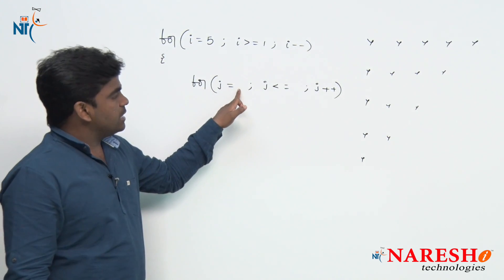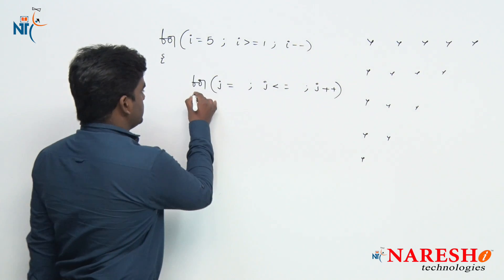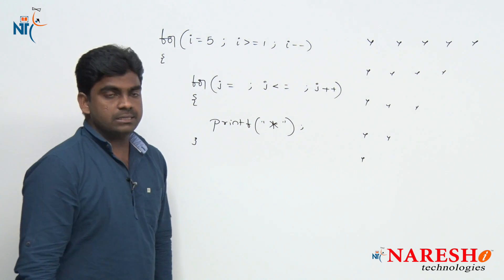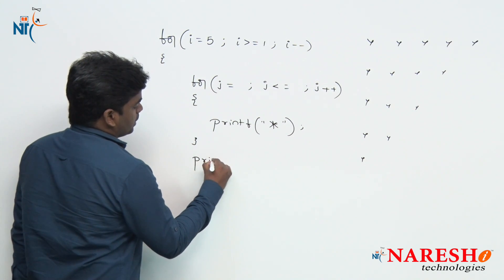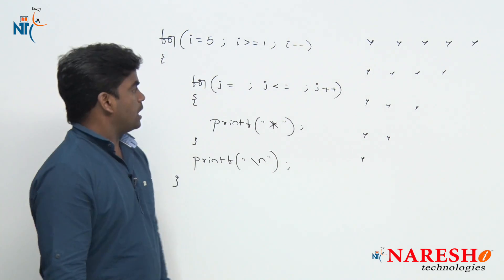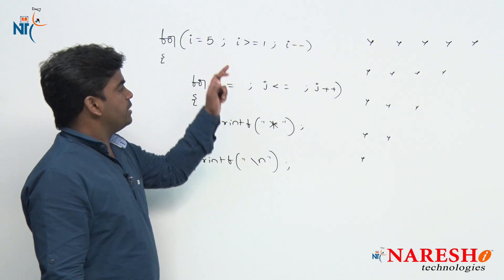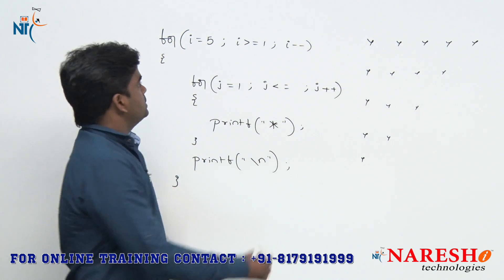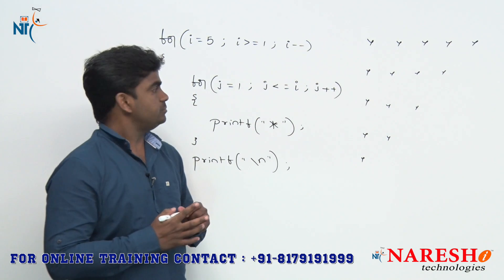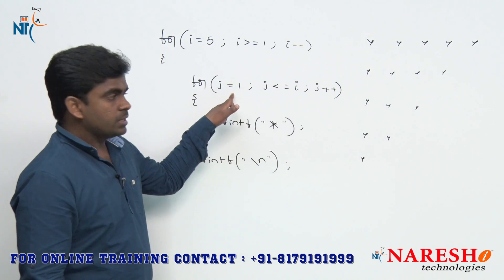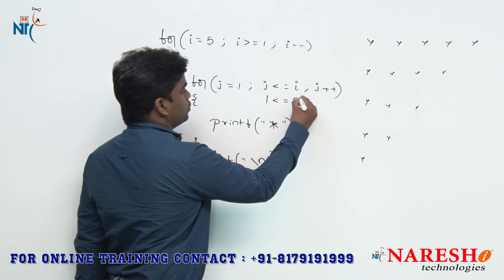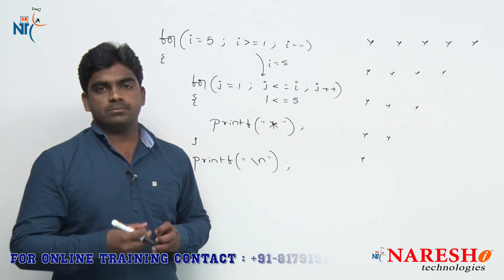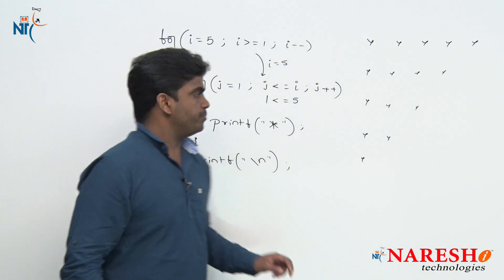So, what is the initial value and what is the condition? We are printing the star, and just after completion of the inner loop we are sending control to the next line. Whenever i value is 5, we need to print 5 stars. So j value starts with 1, j is less than or equals to i. j value always starts with 1, and the inner loop repeats as long as j is less than or equals to i, which is 5. So 1 to 5, it repeats 5 times, printing 5 stars in the first row.